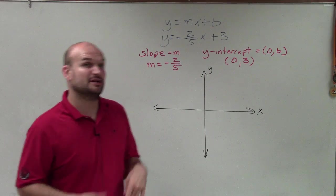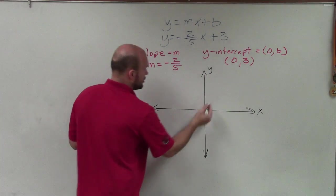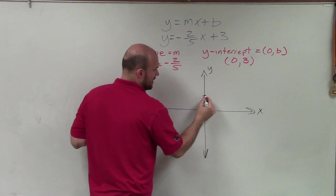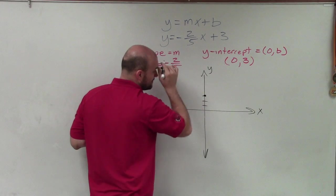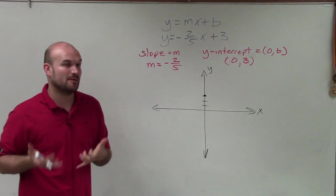is a point. So the first thing we want to do is plot my y-intercept. So I go up to (0,3), which is 1, 2, 3, and I make a nice big dot. OK? So that's my point (0,3), which is my y-intercept.